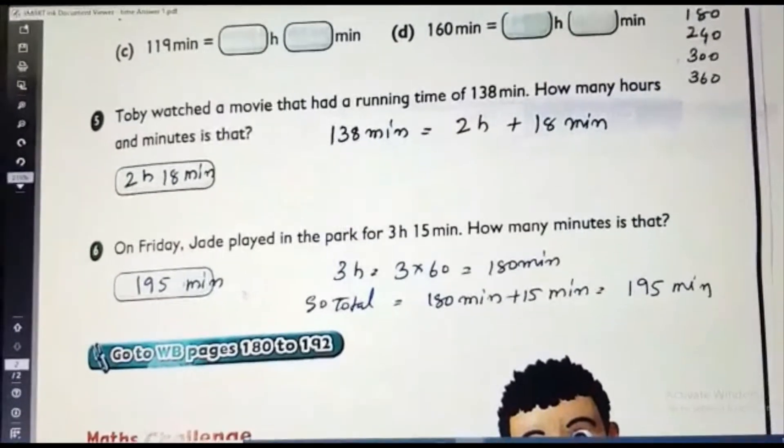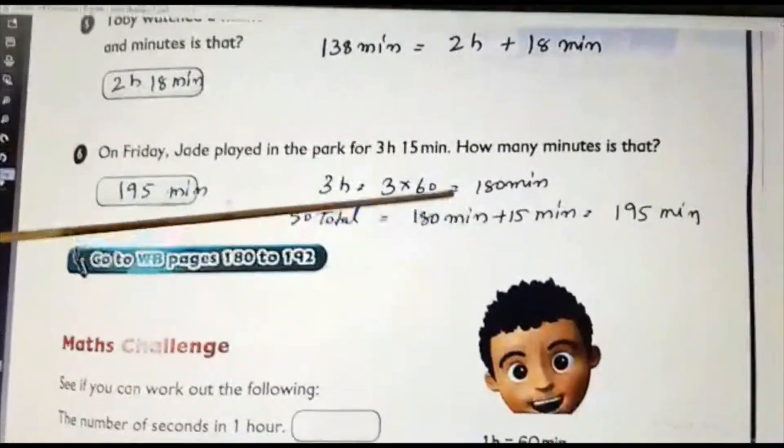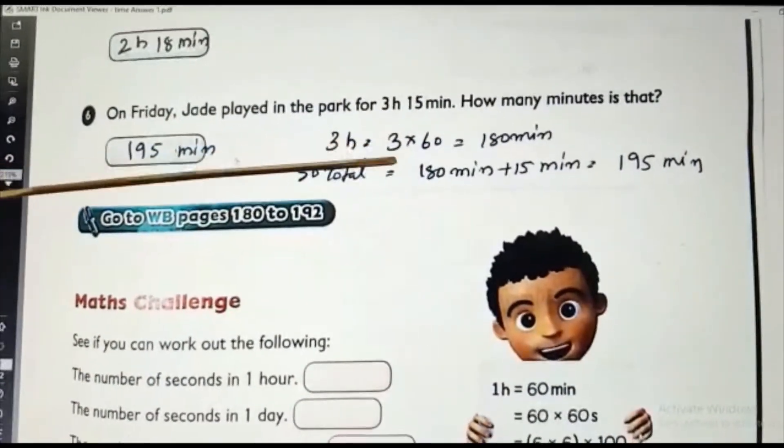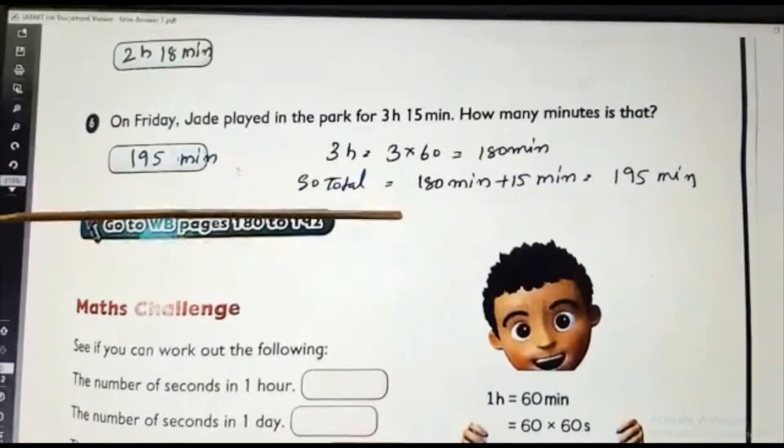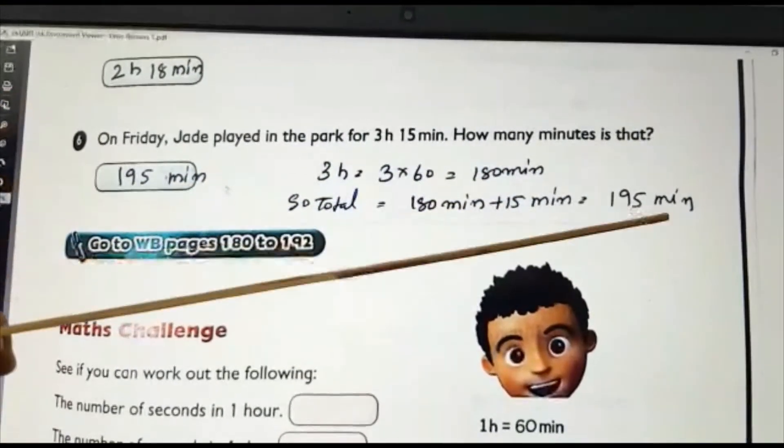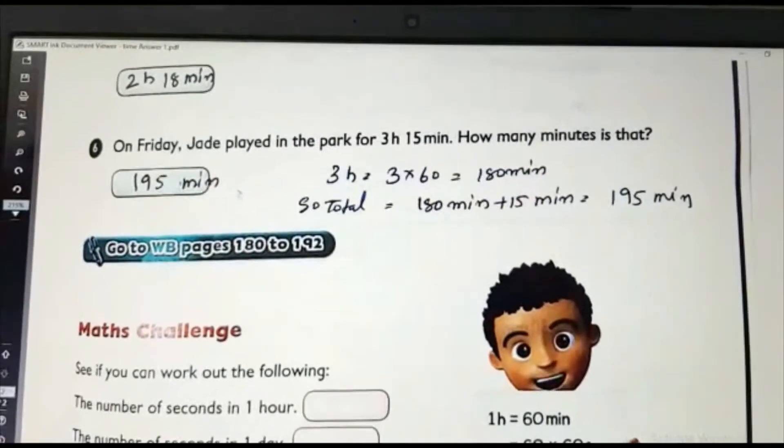So, the last one. See? 3 hours, 15 minutes. We want to convert to minutes. So, minute I am not converting. 3 hour is 3 into 60. That is 180 minutes. So, what is the total? 180 minutes plus 15 minutes. It is 195 minutes. Okay. Is it clear?